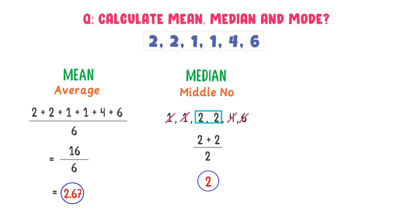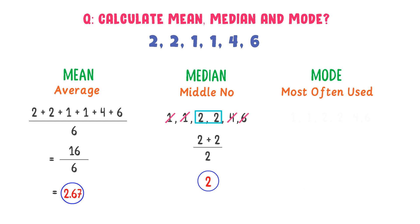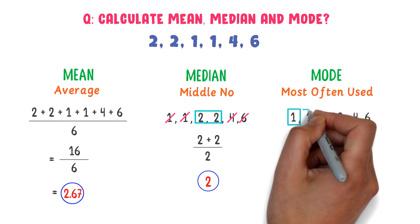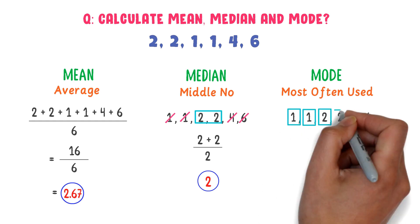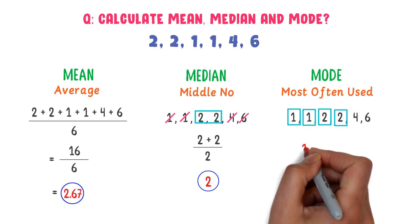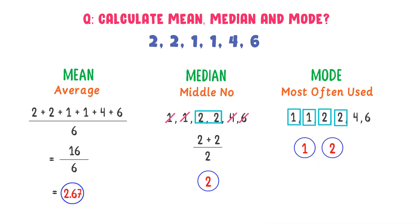Thirdly, we know that mode is the most often used number. We can see that 1 is repeated 2 times and 2 is also repeated 2 times. So the mode of this data set is 1 and 2. Hence, note down this important example.